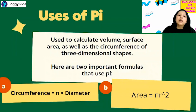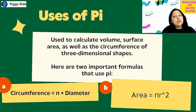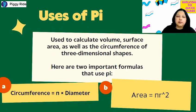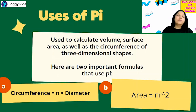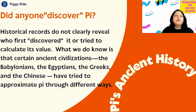Where do we use pi? We use pi to calculate the volume, surface area, and circumference of three-dimensional shapes. You must have used these formulae: circumference equals pi times diameter. The area of a circle is also pi r squared. So you can see pi has many different uses.